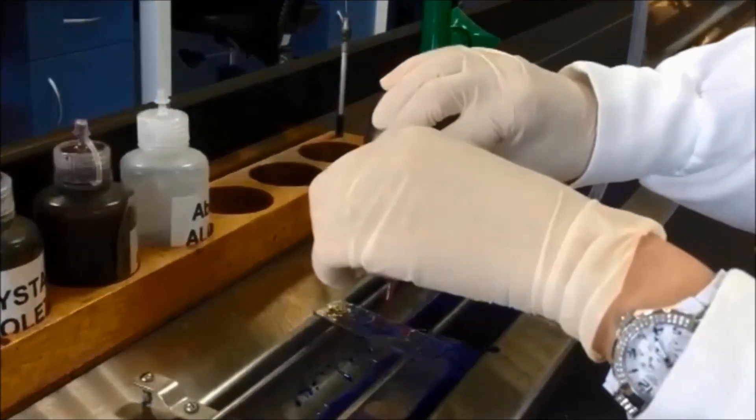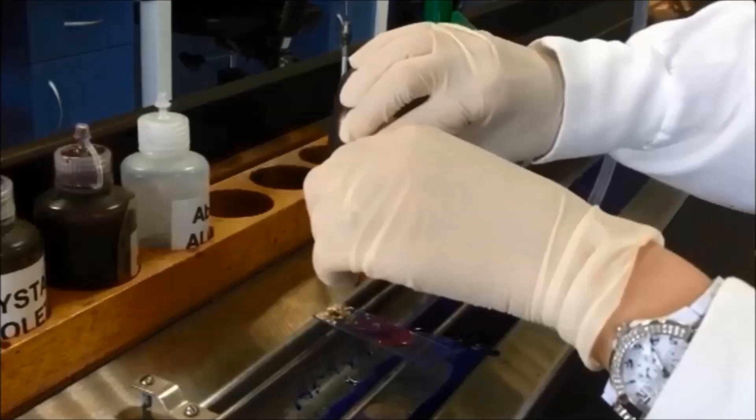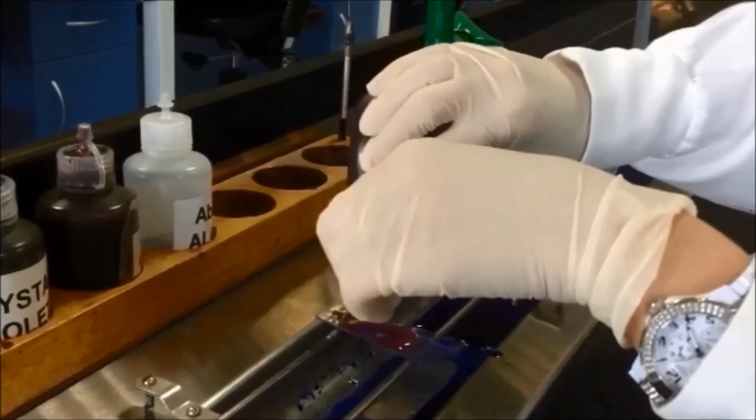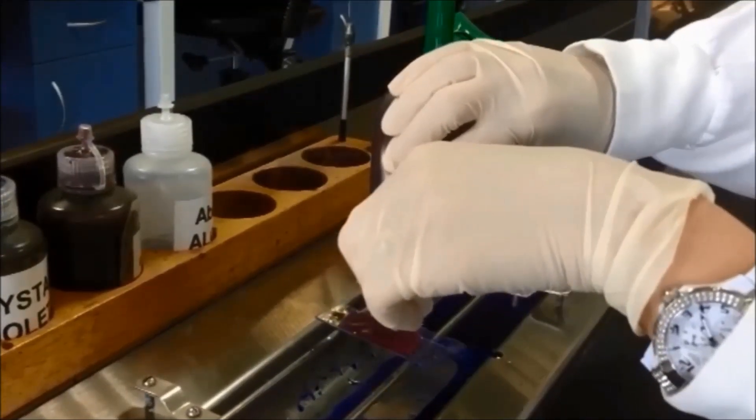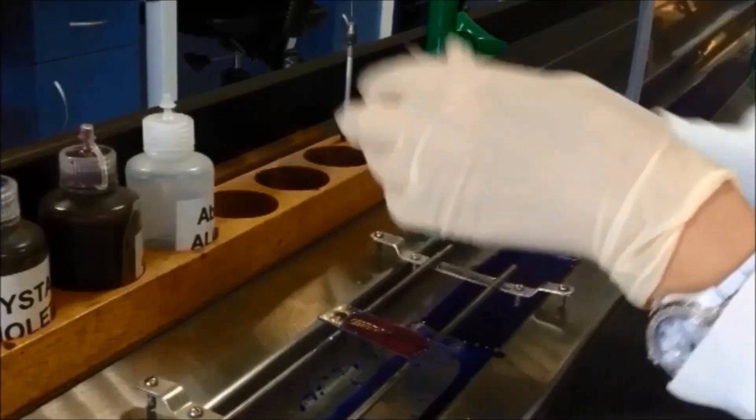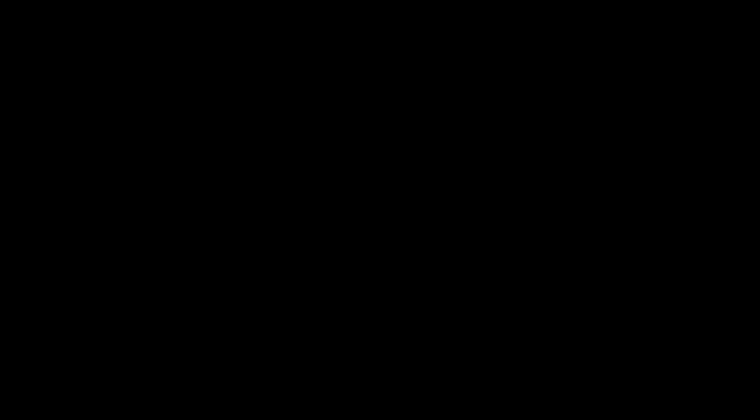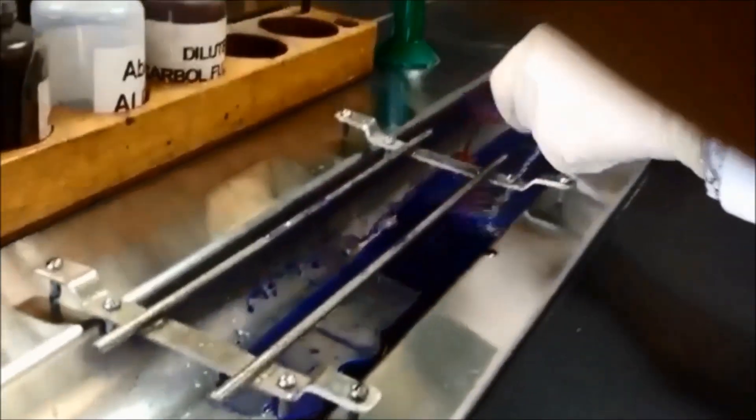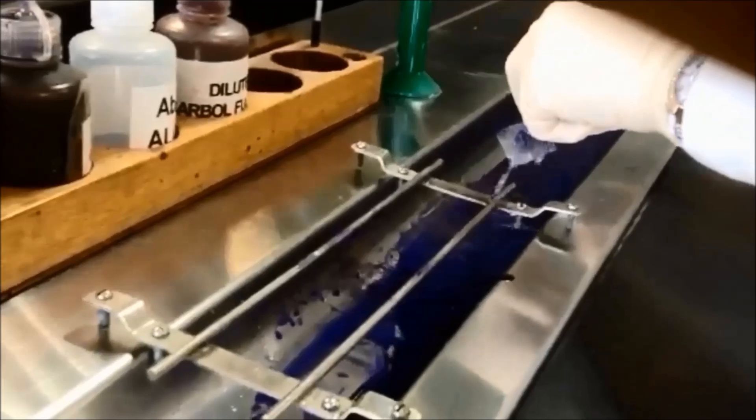Counter-stain by flooding the slide with Dilute Carbolfuchsin for 30 seconds. Once again, wash with water.